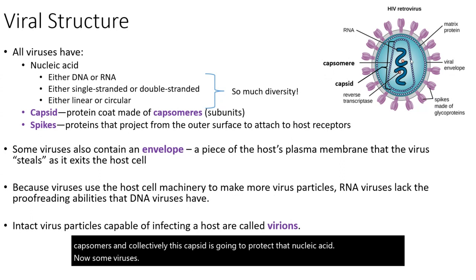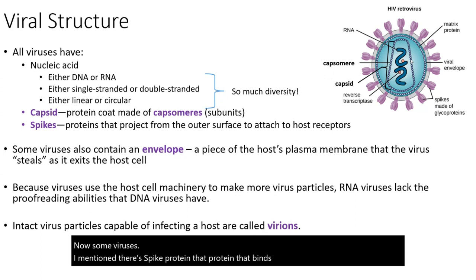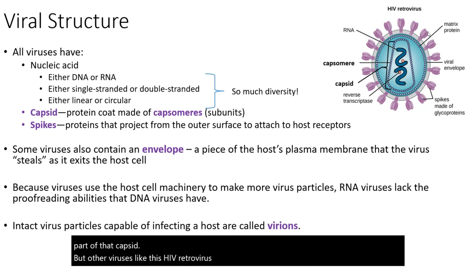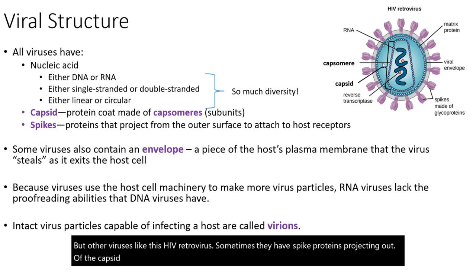Some viruses have spike proteins — the proteins that bind to the host receptor — that are part of the capsid. But other viruses, like the HIV retrovirus, sometimes have spike proteins projecting out of the capsid. And there's a lot of diversity in the structure of these spike proteins as well.